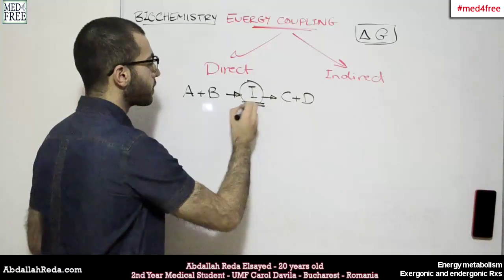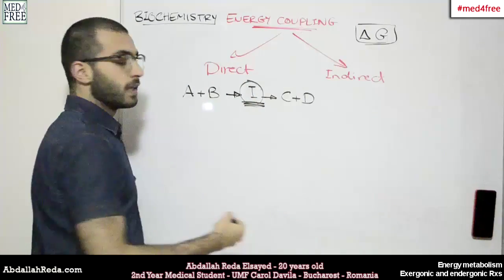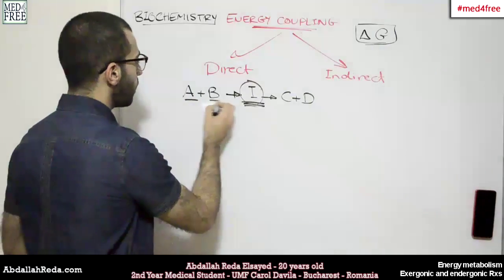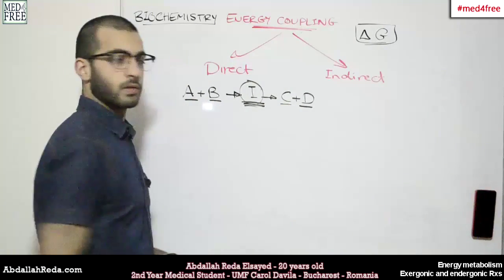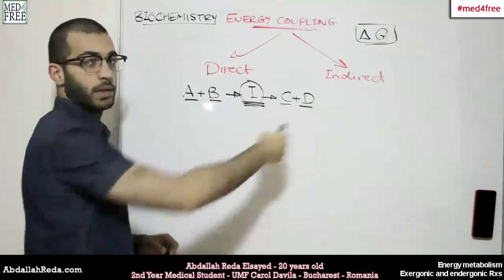And the chemical structure of this intermediary compound should be related to any of these compounds that we have here. So part of it would be similar to A or B or C or D. So it's an intermediate chemical compound.